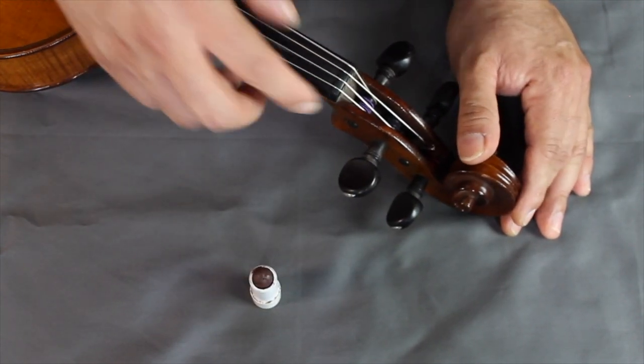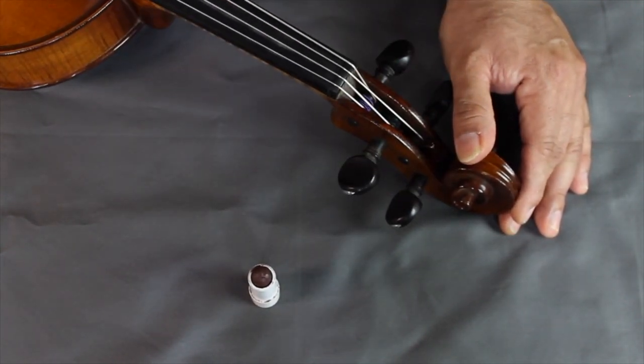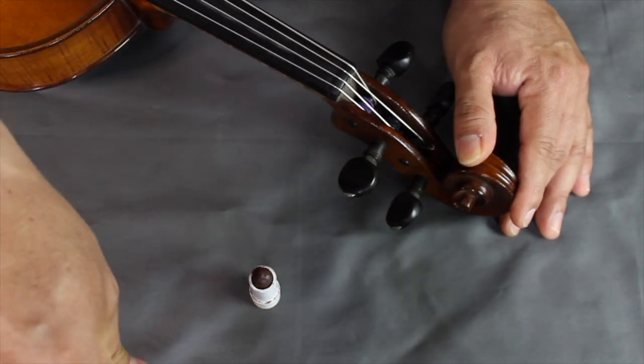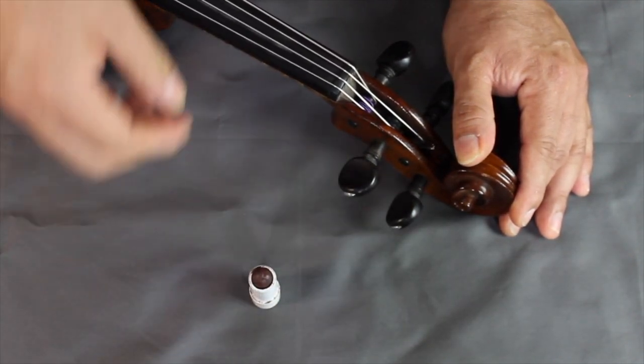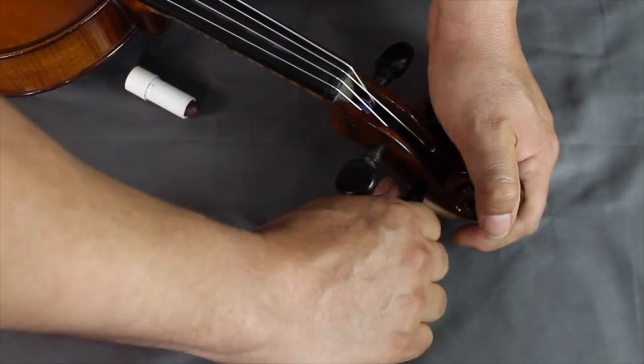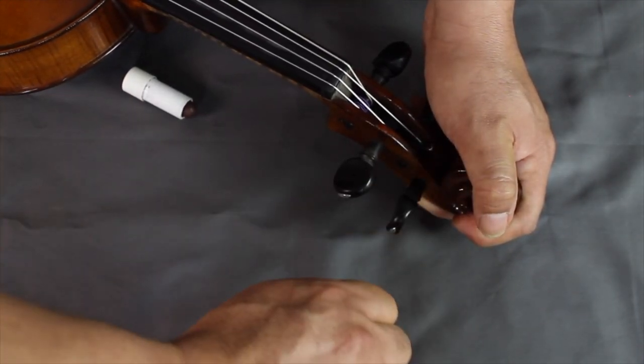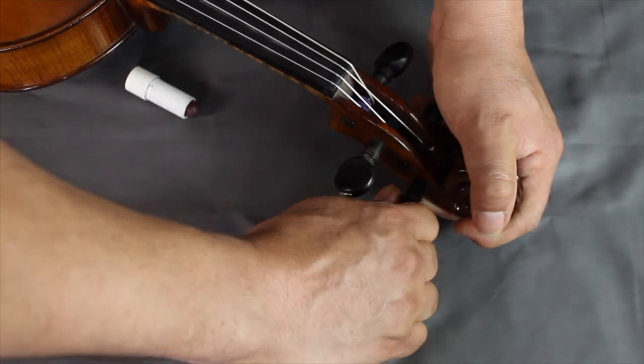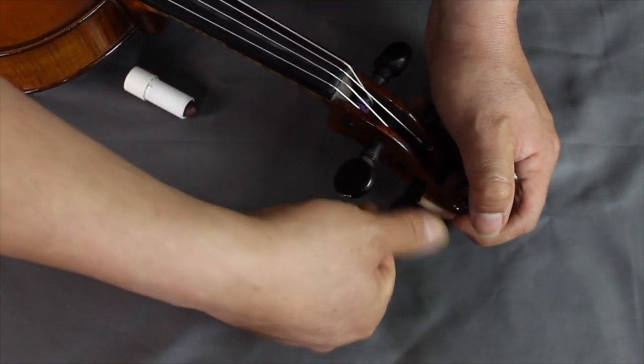But we are going to loosen it and remove the string from the peg. We're going to take the peg out. So make sure you watch the video so you can do it safely. So let's set this aside. I'm going to remove this peg. I'm simply going to turn and pull instead of pushing because I want the peg to come loose on purpose.